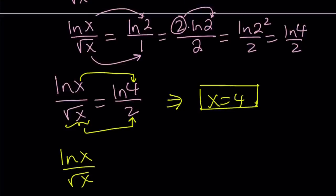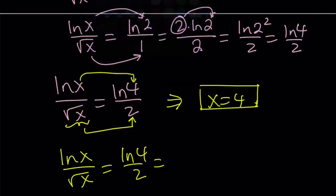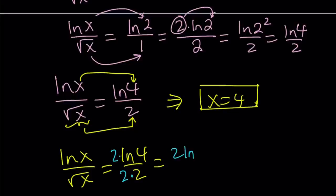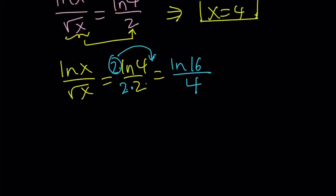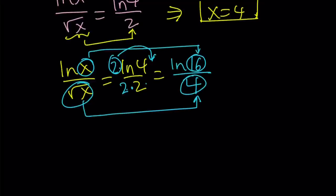I know that this is LN 4 over 2. So why don't we multiply the top and the bottom by 2, and that's going to give me 2 LN 4. I can skip a step here and write this as LN 4 squared, which is LN 16, divided by 2 times 2, which is 4. If you compare these two, LN x and LN 16, and square root of x and 4, you're going to notice something interesting. It works again. If x is equal to 16, square root of x is equal to 4, so x equals 16 is another solution.